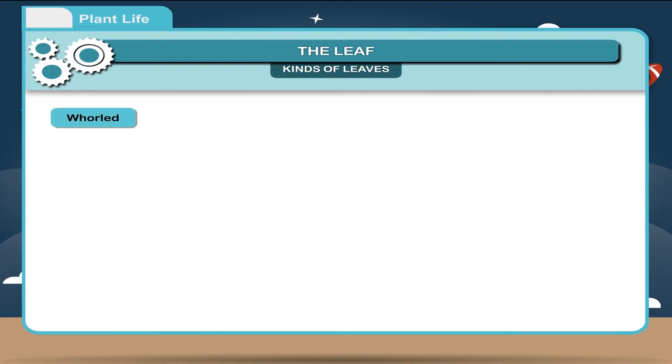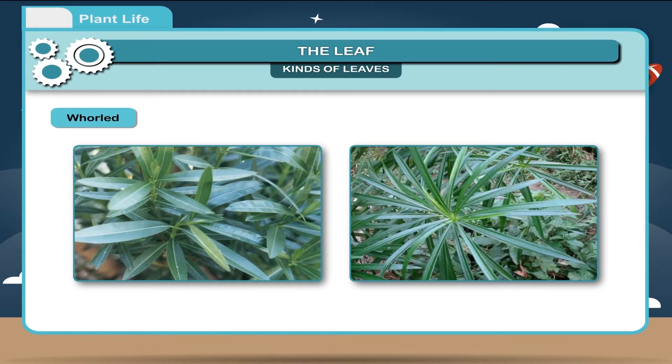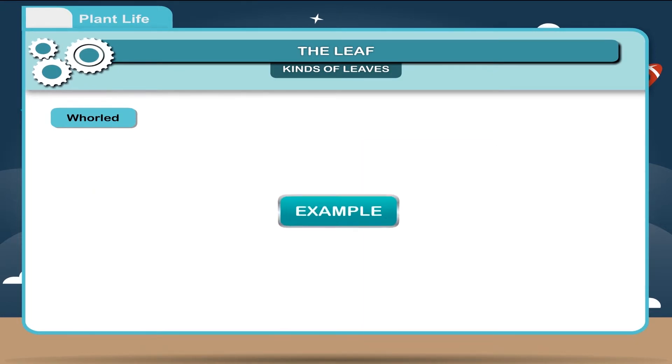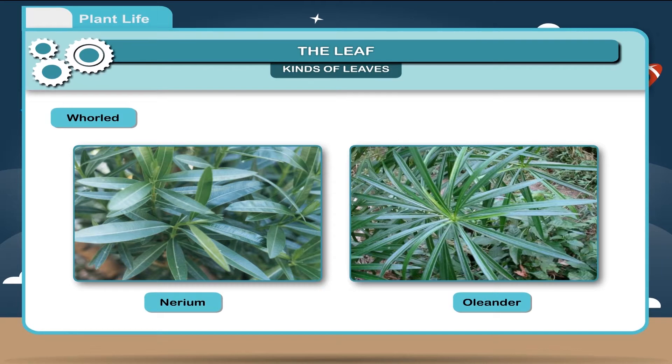Whorl. When more than two leaves develop at each node and are arranged in a circle. Example, nerium or oleander.